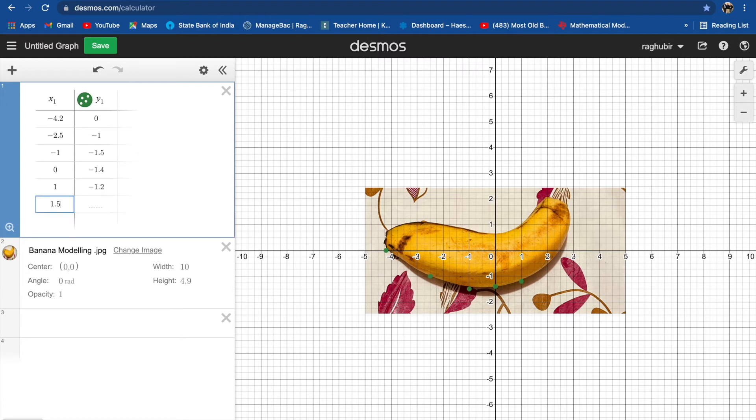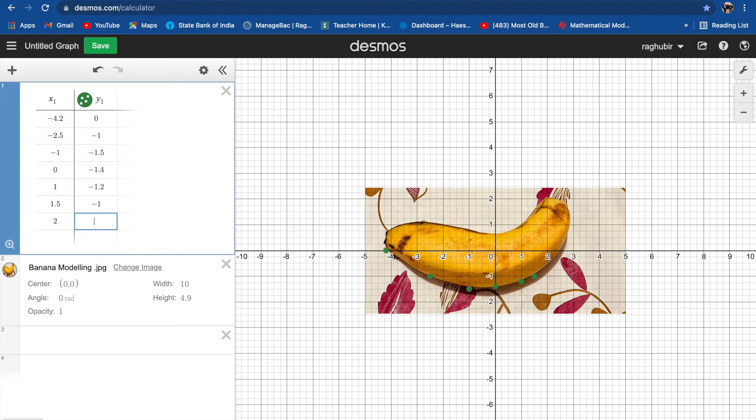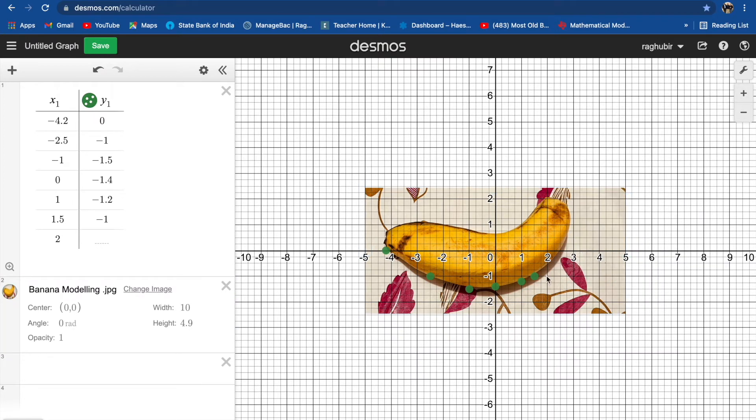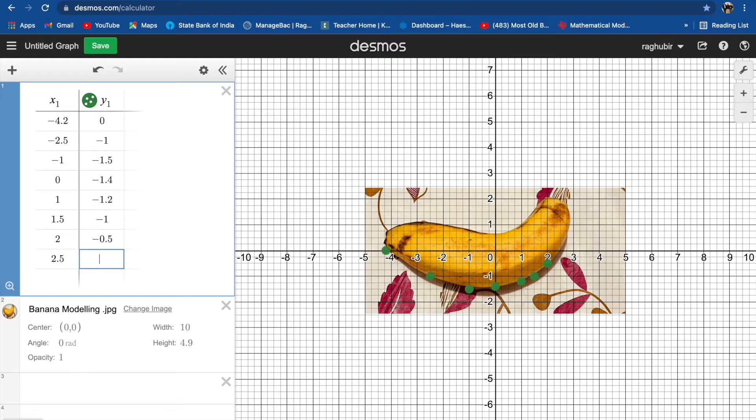Then X is 2 and Y is negative 0.5. Then X is 2.5, Y is 0. At least 10 points, so one two three four five six seven eight, two more points.